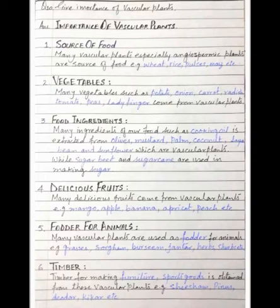The next heading: delicious fruits. Many delicious fruits come from vascular plants — for example, mango, apple, banana, apricot, peach, etc.